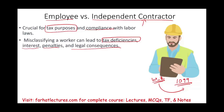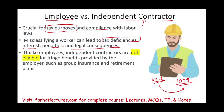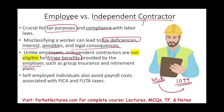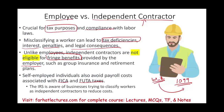What are some of the differences between an employee and an independent contractor? Unlike employees, if you're an independent contractor you're not eligible for fringe benefits like group insurance or retirement plans. Also, self-employed individuals avoid having payroll costs associated with FICA taxes paid by the employer, so the company saves money. The IRS is aware of these benefits from misclassifying employees as independent contractors.